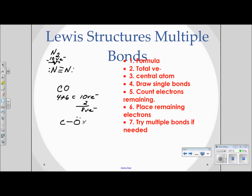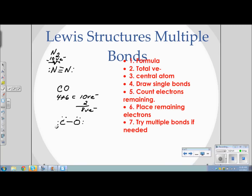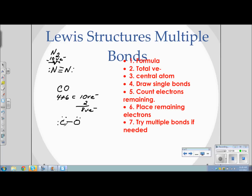After placing all eight remaining electrons, we check: each atom has only six electrons. Houston, we have a problem again — neither atom has an octet. So one atom must share a lone pair. Oxygen shares a lone pair into the bond, giving carbon eight electrons. But oxygen now has only six, so we still don't have an octet.